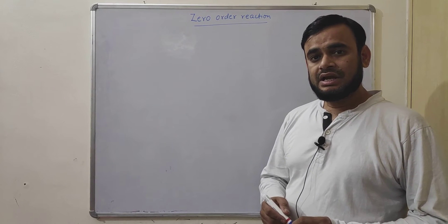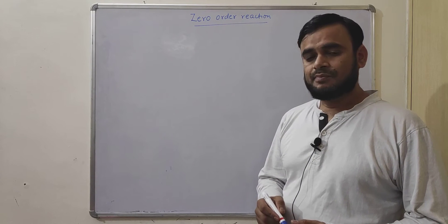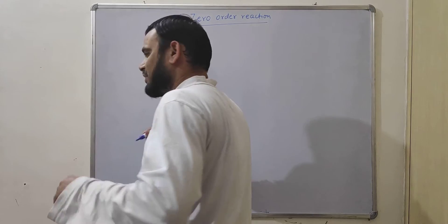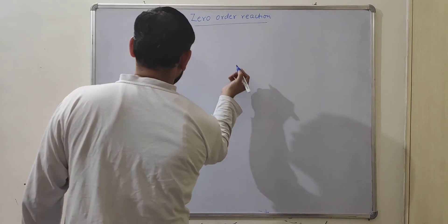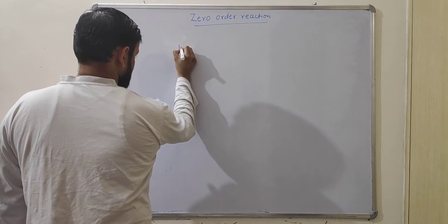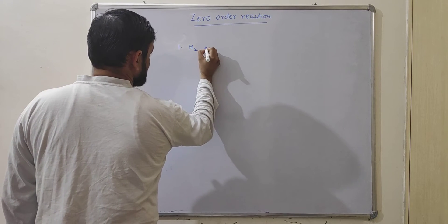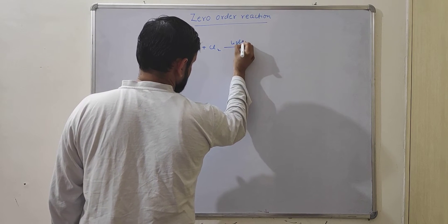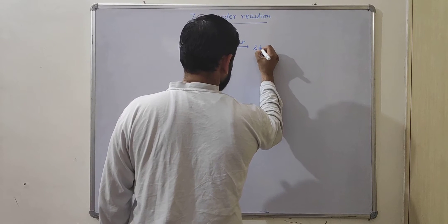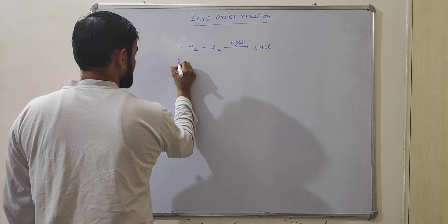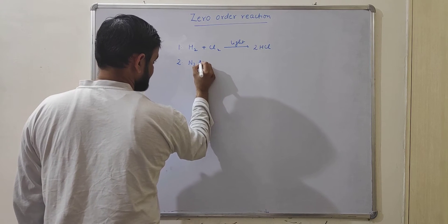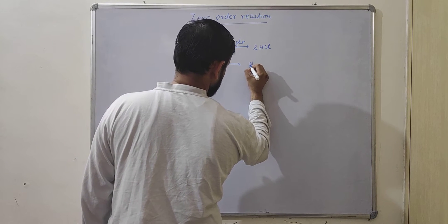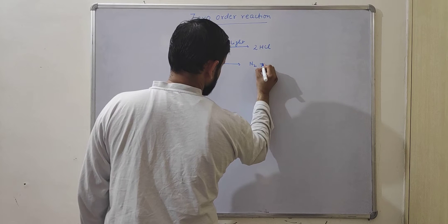A zero-order reaction is defined as a reaction in which the rate does not depend upon the concentration of the reactant. Examples of zero-order reactions include the reaction of hydrogen and chlorine in the presence of light to produce HCl, and the decomposition of nitrous oxide on platinum to produce nitrogen and oxygen.